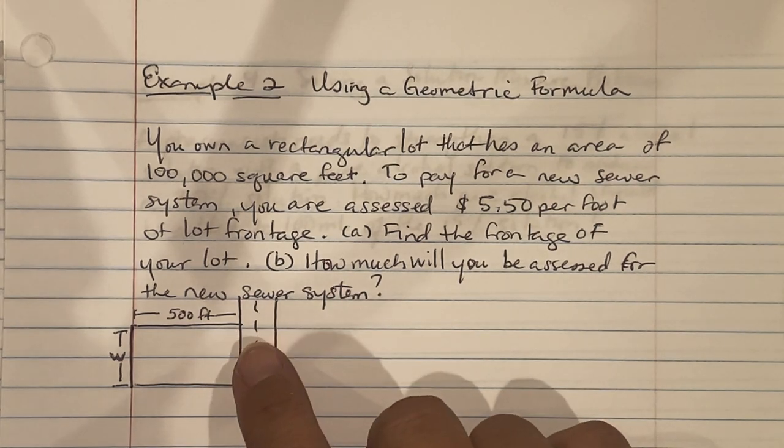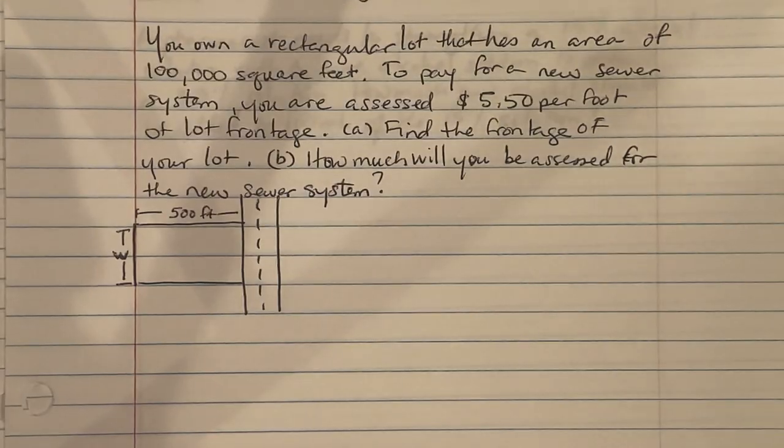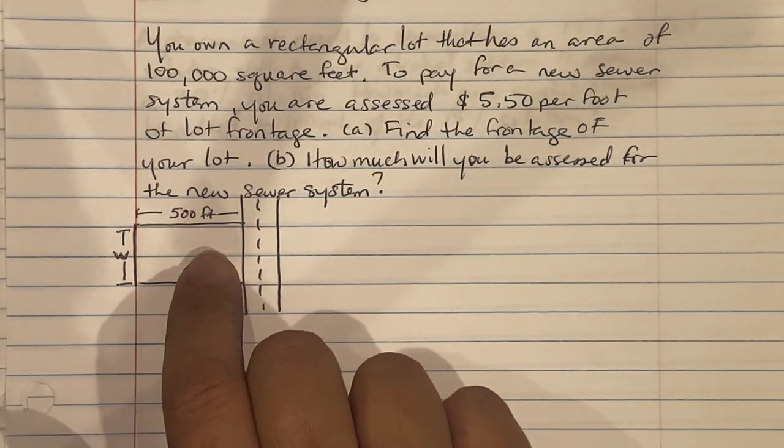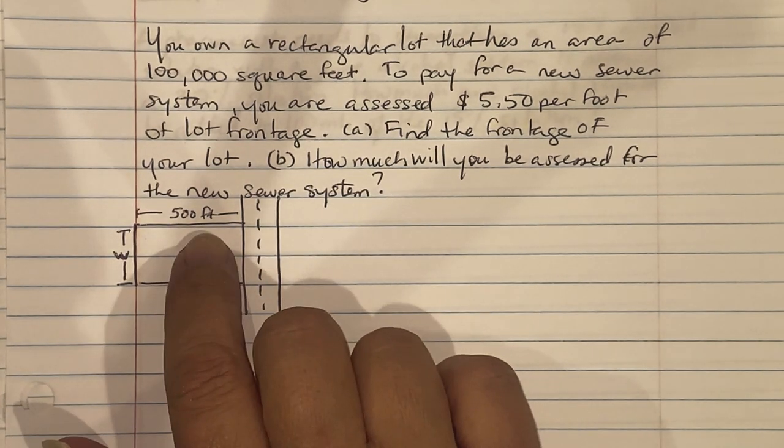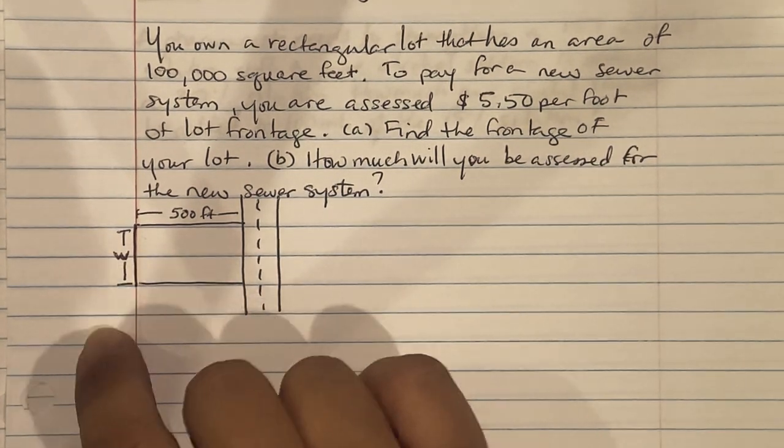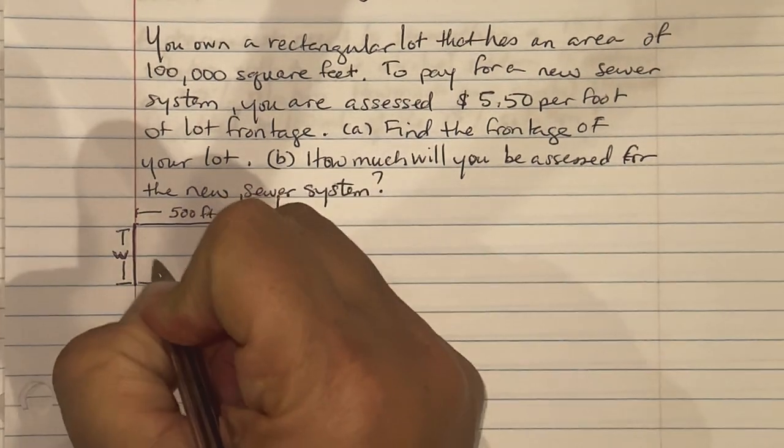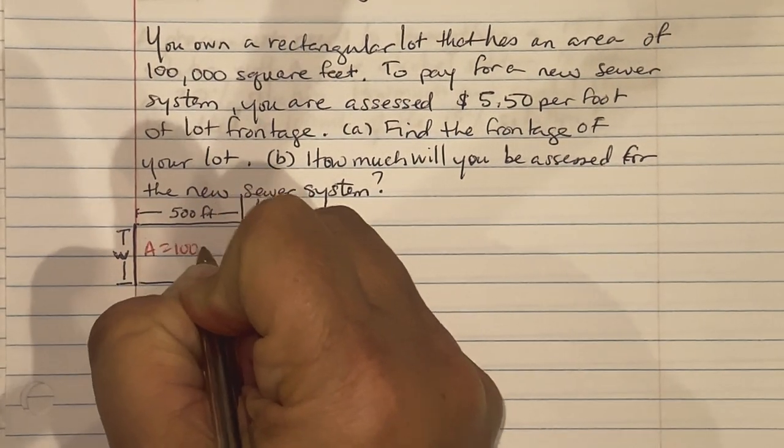So here's the road and here's your lot. They gave you the length, it's 500, and they want us to find the width, which is our front lot. They also told you that the area was 100,000 square feet.